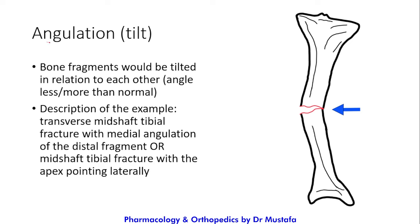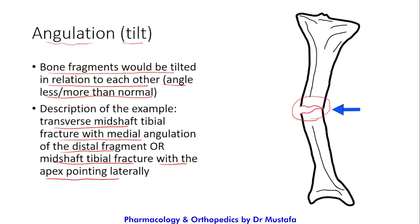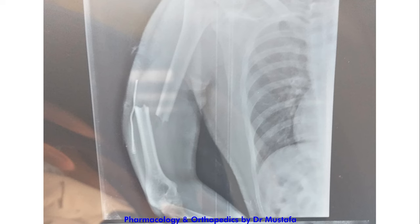The second pattern of displacement is angulation, also called tilt, where bone fragments are tilted in relation to each other — the angle between them is less or more than normal. For example, a transverse mid-shaft tibial fracture with medial angulation of the distal fragment. Alternatively, you can describe it as: 'mid-shaft tibial fracture with the apex pointing laterally.' Another example is a transverse mid-shaft humeral fracture with medial angulation of the distal fragment.